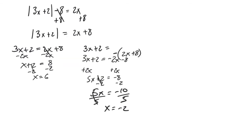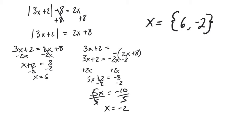Since we're doing this on Delta Math, you also need to know how to type the answer in exactly the way they're asking. They want your answers written as: x equals, then a squiggly bracket — also known as a brace — with 6 comma negative 2, and then the closing brace. So instead of writing x equals 6 and x equals negative 2 separately, you write it as x equals {6, -2}.